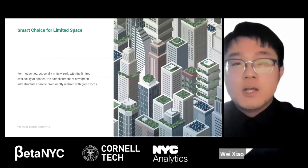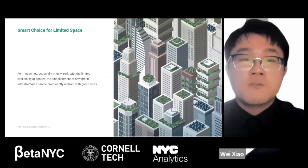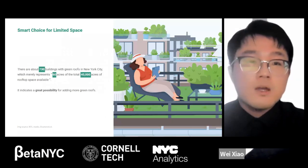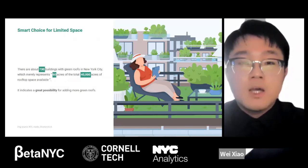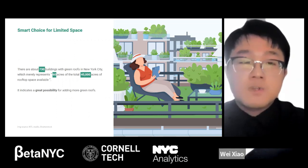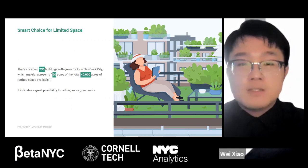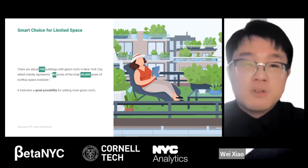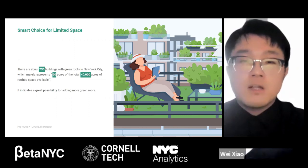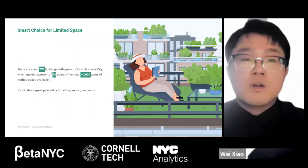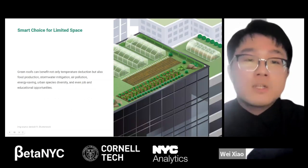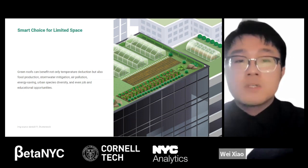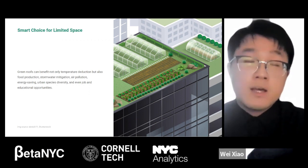Among all green infrastructure techniques, green roofs are particularly feasible for construction in urban metropolises like New York City. There are about 730 buildings with green roofs in New York City, representing merely 60 acres of the total 40,000 acres of rooftop space available. In other words, less than 1.1% of New York's 1 million buildings currently have green roofs. This indicates a great possibility for adding more green roofs across the city, benefiting temperature reduction, food production, stormwater mediation, air pollution reduction, energy saving, urban species diversity, and even job and educational opportunities.